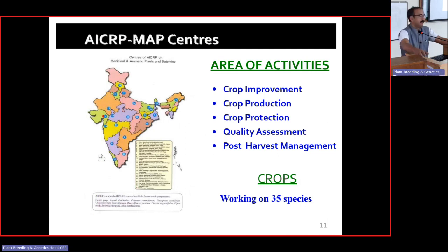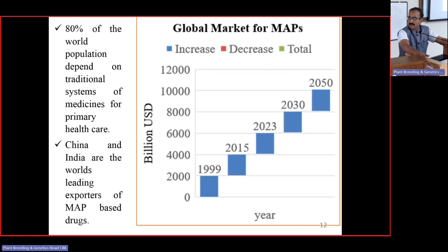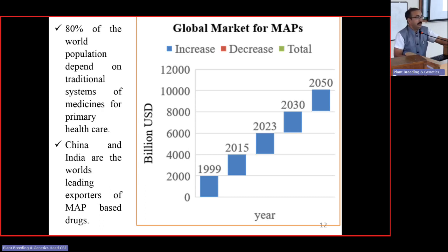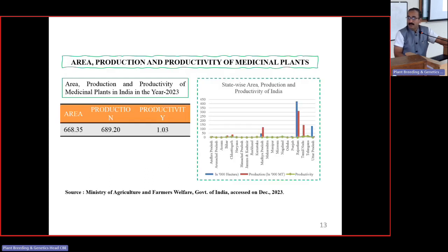ICAR's MAP centers — there are about 22 such centers throughout the country contributing to crop improvement, crop production, crop protection, quality assessment, and post-harvest management. The global market for MAPs, in 2023, constitutes near about 6,000 billion US dollars, which is speculated to increase to 8,000 by 2030 and 10,000 by 2050. China and India are the world's leading exporters, and 80% of the world population depends on traditional systems of medicine for primary health care.